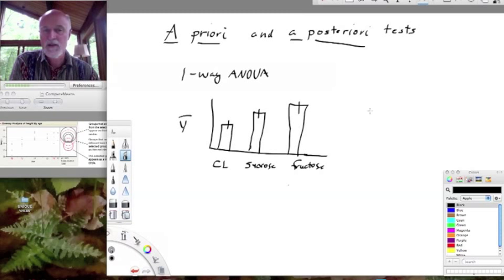When we do an analysis of variance, we're asking the question: could these three samples have been drawn from a parametric population with a single mean mu? And let's say we reject that. Let's say we find that, in fact, the means differ. There is some variation among means.